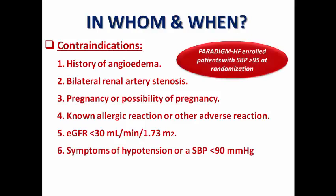Symptomatic hypotension or systolic blood pressure less than 90 mmHg is also a contraindication, because in the PARADIGM-HF trial, enrolled patients had systolic blood pressure above 95 mmHg at randomization. Patients with chronic liver disease, Child-Pugh class C, are also preferred not to receive ARNI.